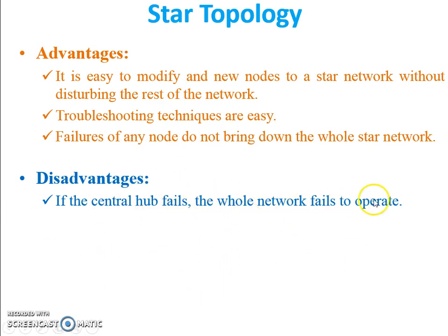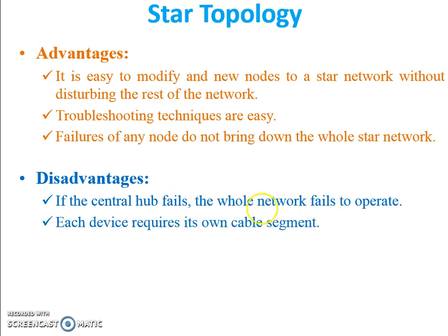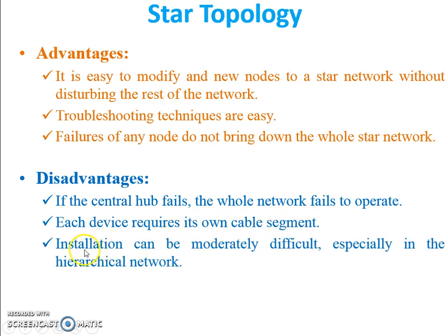Disadvantages: if the centralized hub or switch fails, the whole network fails to operate and the network will not work. Each device requires its own cable segment. The third disadvantage is that installation can be moderately difficult, especially in hierarchical networks where many star networks are connected to each other.